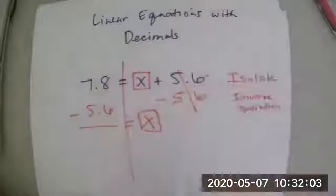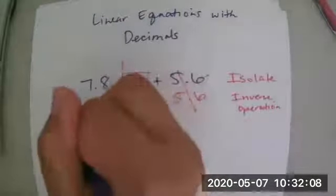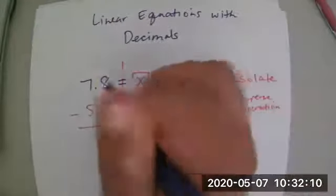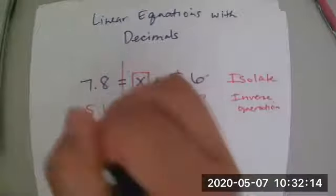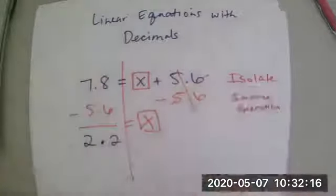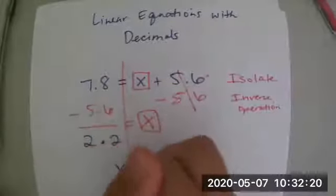And then we have a subtraction problem over here. So we're going to just subtract it out. We're going to bring our decimal place down. 8 minus 6 is 2, 7 minus 5 is 2. So our answer is, and we can just flip it around, x equals 2.2.